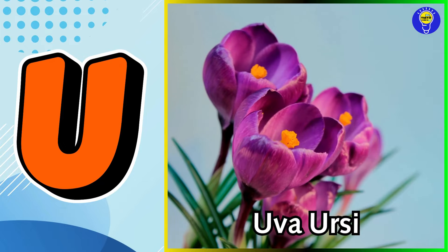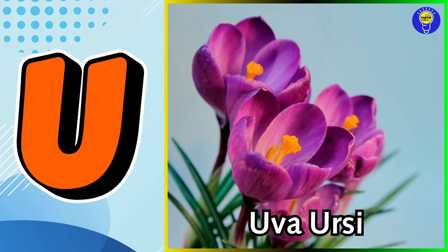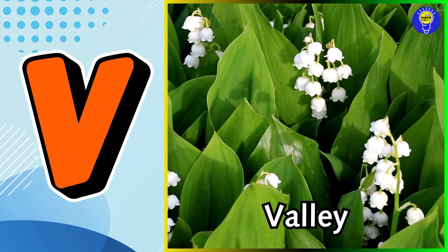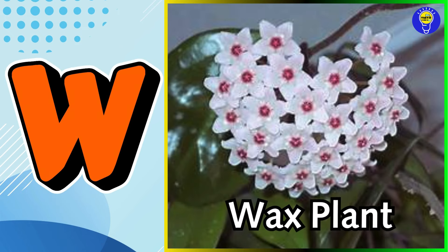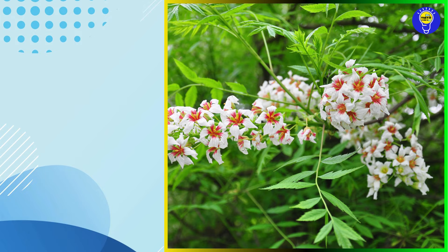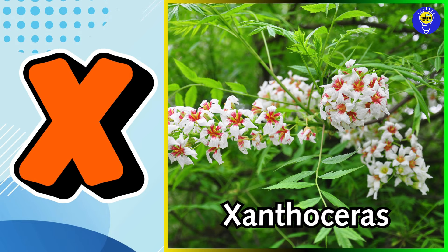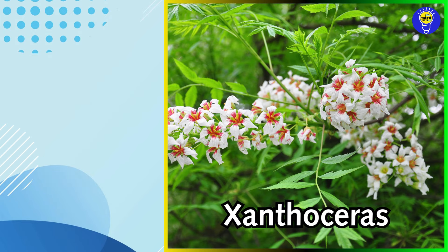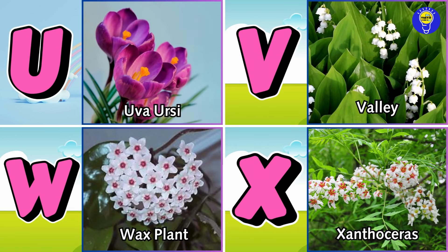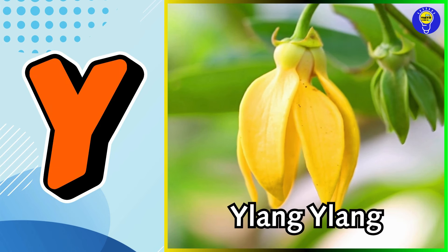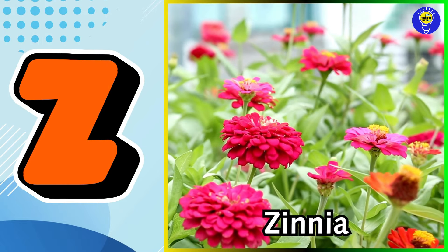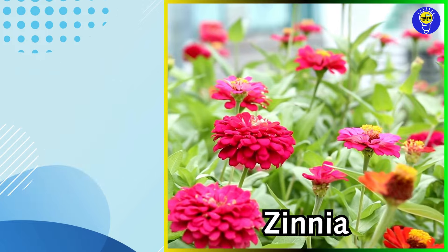U is for Uva Ursi flower. U, U. Uva Ursi flower. V is for Valley flower. V, V. Valley flower. W is for Wax Plant flower. W, W. Wax Plant flower. X is for Xanthoceras flower. X, X. Xanthoceras flower. Y is for Ylang Ylang flower. Y, Y. Ylang Ylang flower. Z is for Zinnia flower. Z, Z. Zinnia flower.